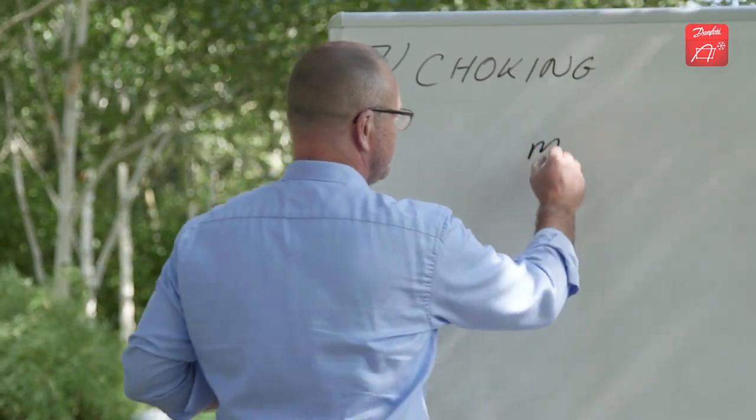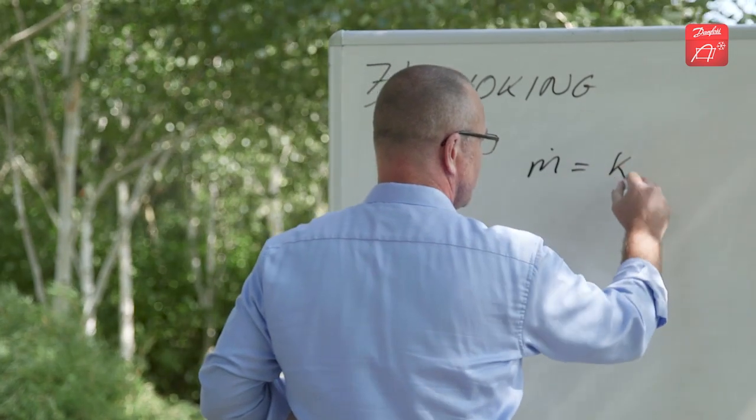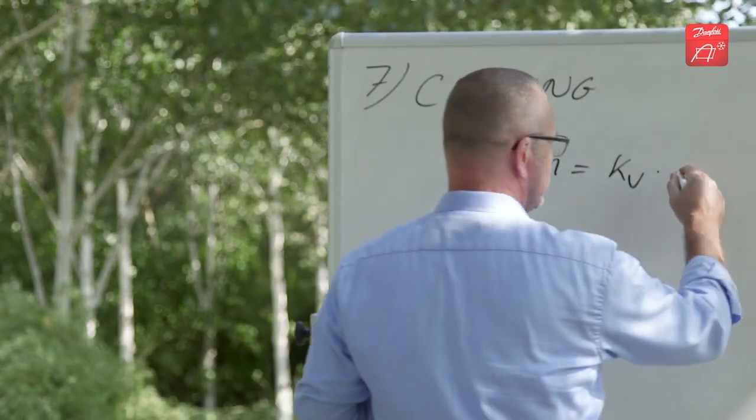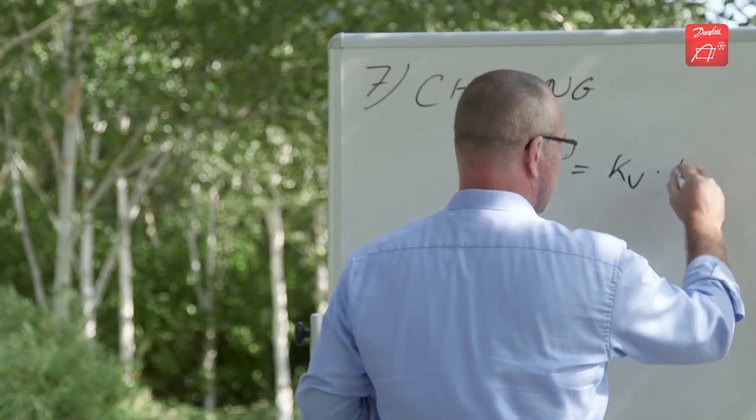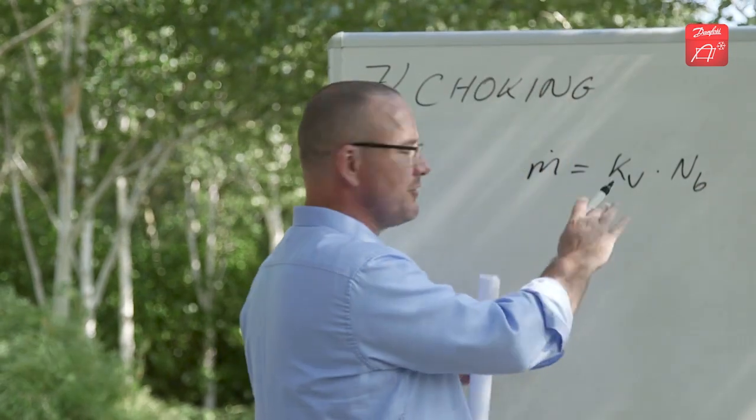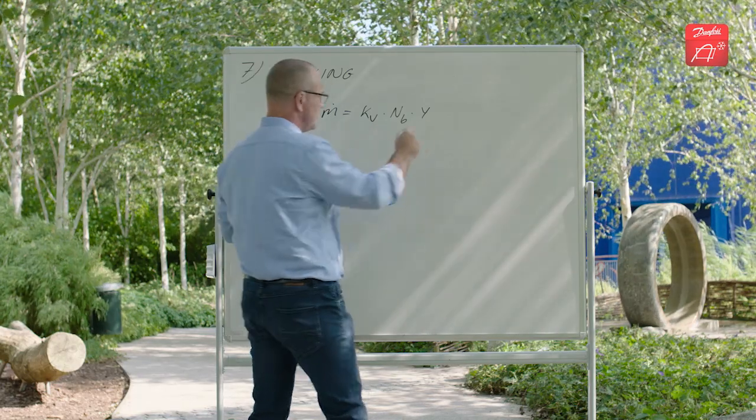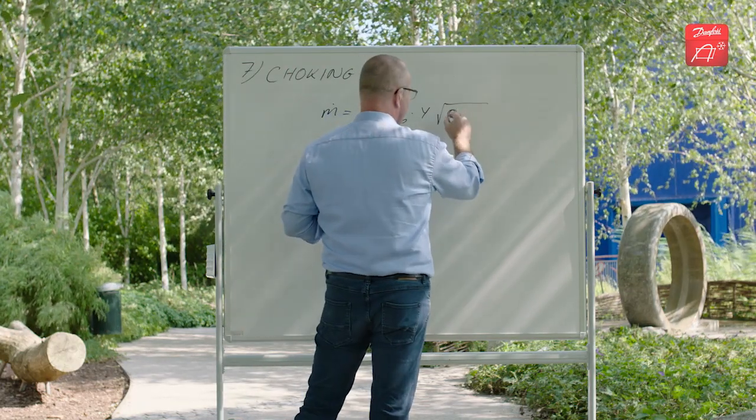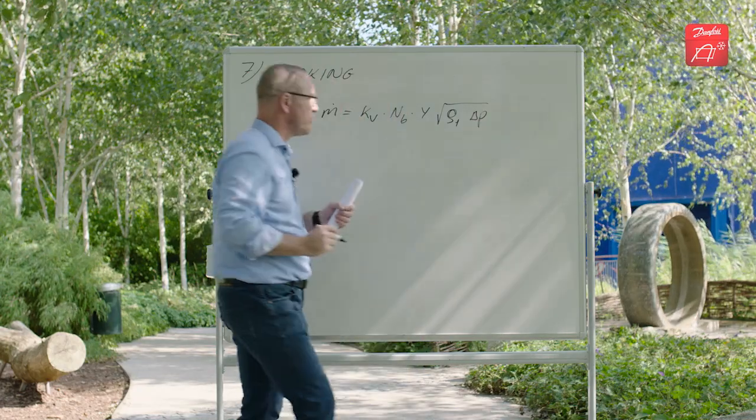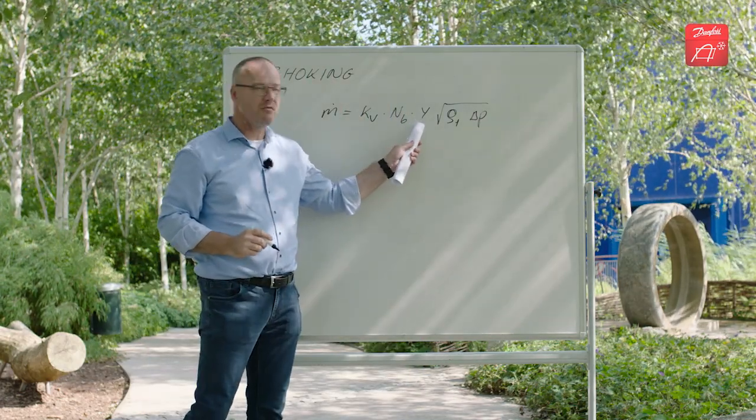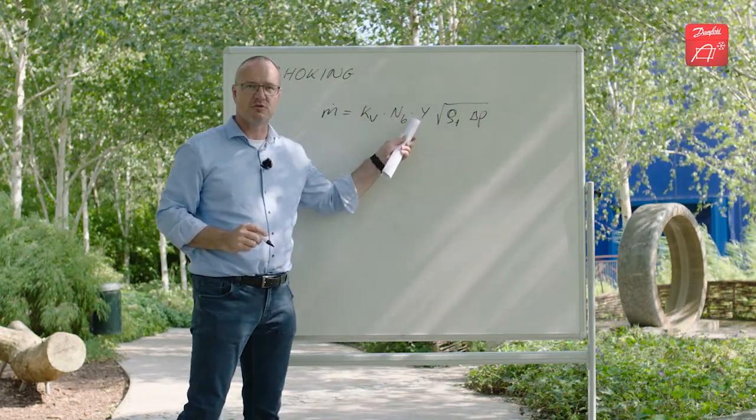The equation was the mass flow equal to kV value, the flow coefficient, times a constant taking care of units and stuff, times the net expansion factor and the square root of the density times the pressure drop. And for incompressible flow the net expansion factor was equal to 1.